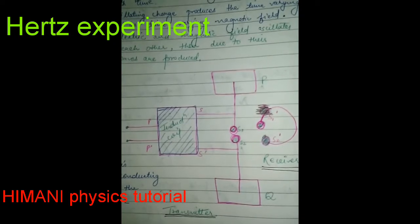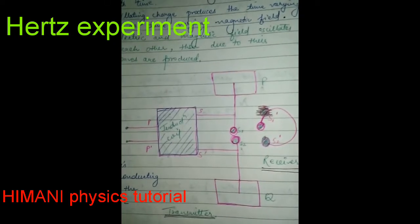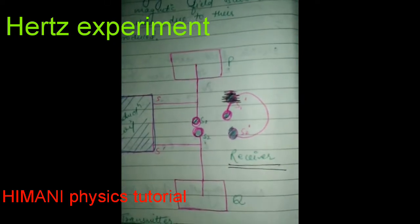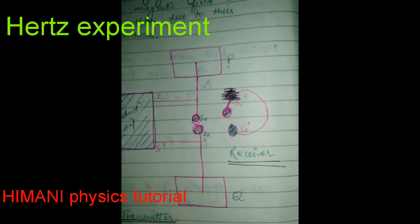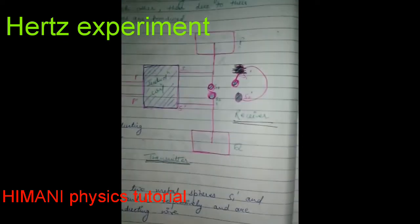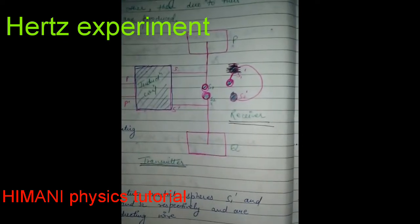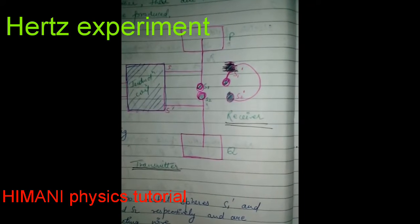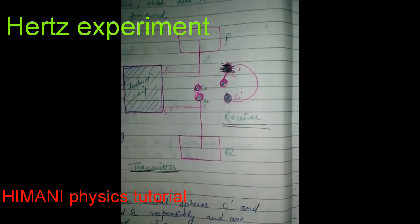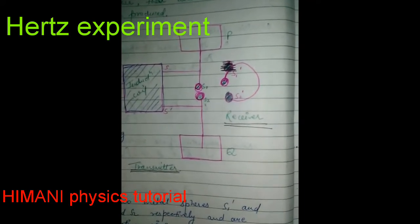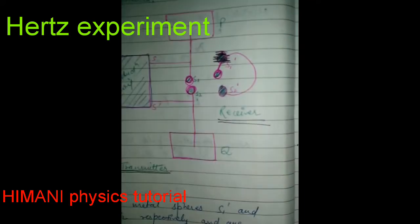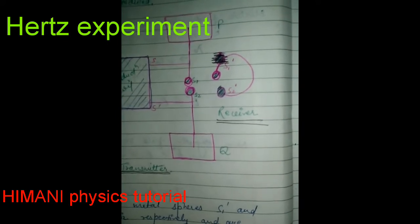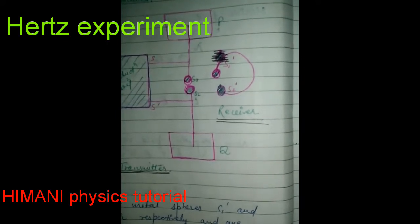The induction coil will charge our metal plates P and Q. When the spheres are highly charged, the air in the gap between them is highly ionized.